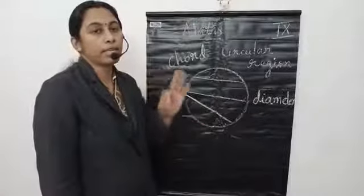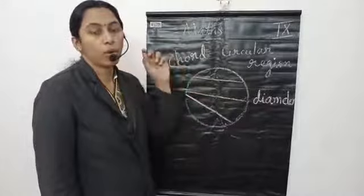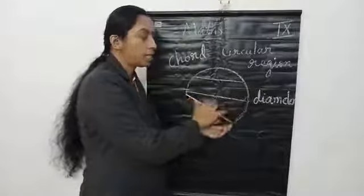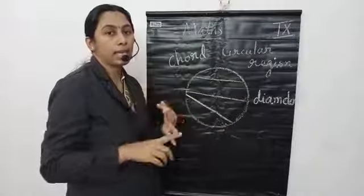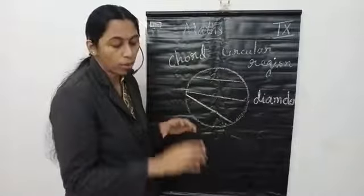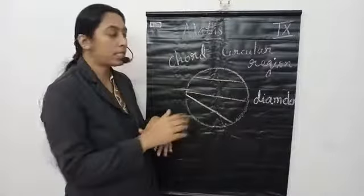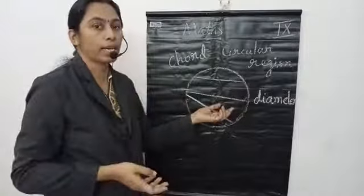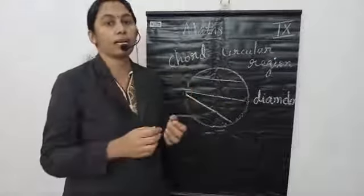Next, three points about diameter: diameter is the longest chord of the circle; all diameters have the same length; and the diameter is two times the radius, or twice the radius.